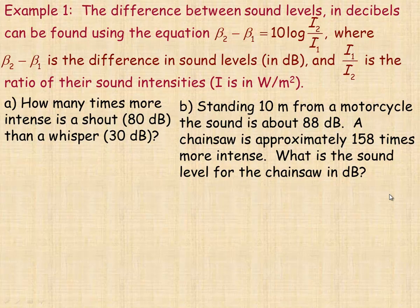On the next page in example 1, this is the actual formula. The difference between sound levels in decibels can be found using this. So the difference in sound levels between two sounds, β₂ - β₁, is equal to 10 times the logarithm of the ratio of their intensities, I₂/I₁, and that ratio would be measured in watts per square meter.